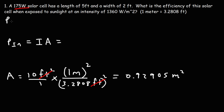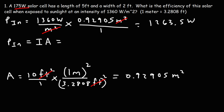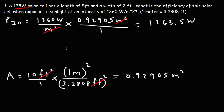Now let's calculate the input power. It's going to be the solar intensity — 1360 watts per square meter — multiplied by the area of the solar cell, 0.92905 square meters. We can cross out the units. Multiplying 1360 by 0.92905 gives us 1263.5 watts. That's how much power from the sun is shining upon the solar cell, given the specific area of the solar cell.